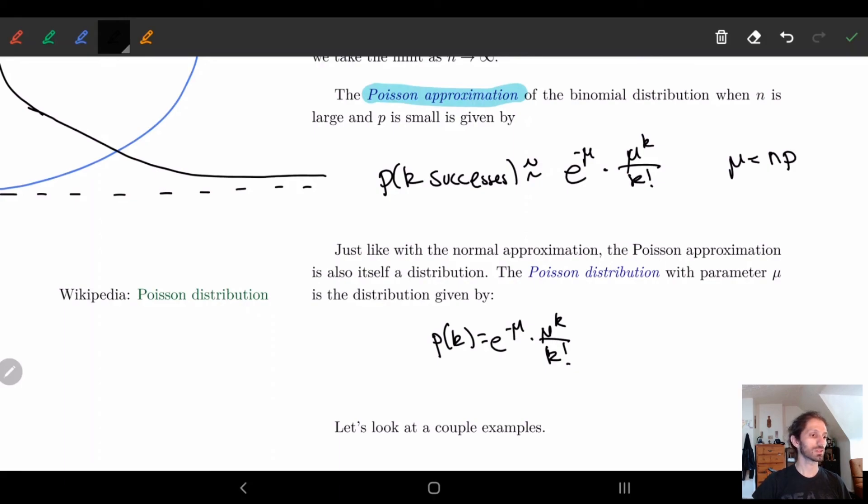Let me double check. Yeah my notes were wrong but this is the right distribution: we have e to the minus μ times μ to the k divided by k factorial. So in the next video we're going to look at some examples of this Poisson approximation and how this works, so I will see you then.